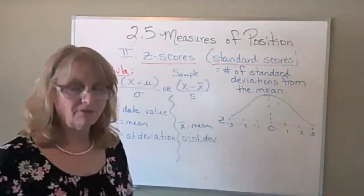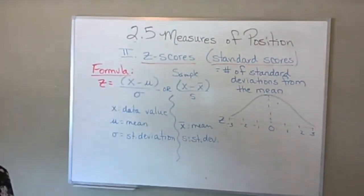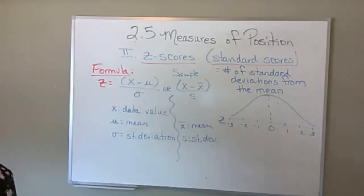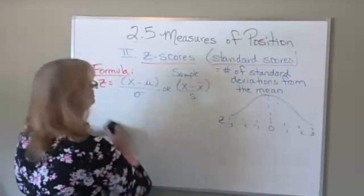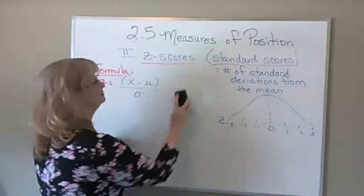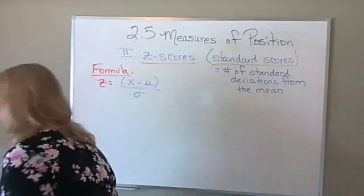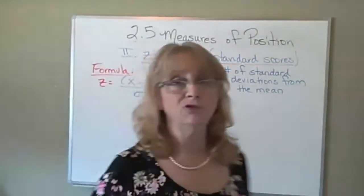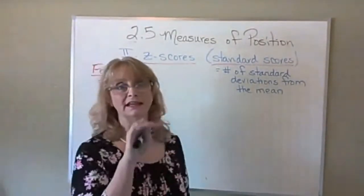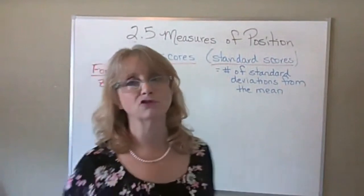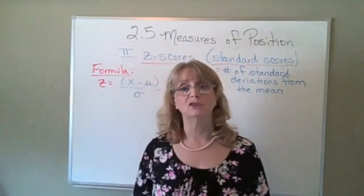Let's take a problem. I'm going to do number seven and show you what I would want you to put in the show work. Number seven says the ages of the winners of a cycling tournament are approximately bell-shaped, the mean age is 28.9, and the standard deviation is 3.2. If you show work, I'm going to put that at the beginning of any question where I expect it — if you don't show work on one where I've asked you to, you won't get credit.